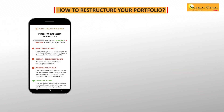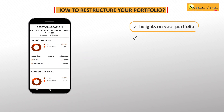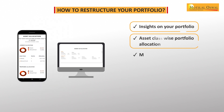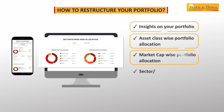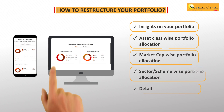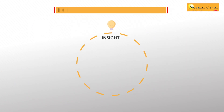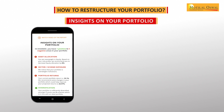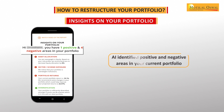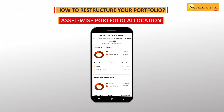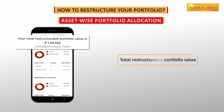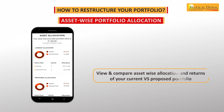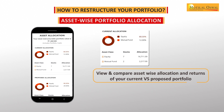On this page you can view the different key sections of your portfolio report. These are: insights on your portfolio, asset class wise portfolio allocation, market cap wise portfolio allocation, sector and scheme wise portfolio allocation, and detailed recommendations. We have insights on your portfolio where you will be provided with the AI-identified positive and negative areas in your current portfolio based on your risk profile. The next section is asset-wise portfolio allocation which will recommend your total restructurable portfolio value.